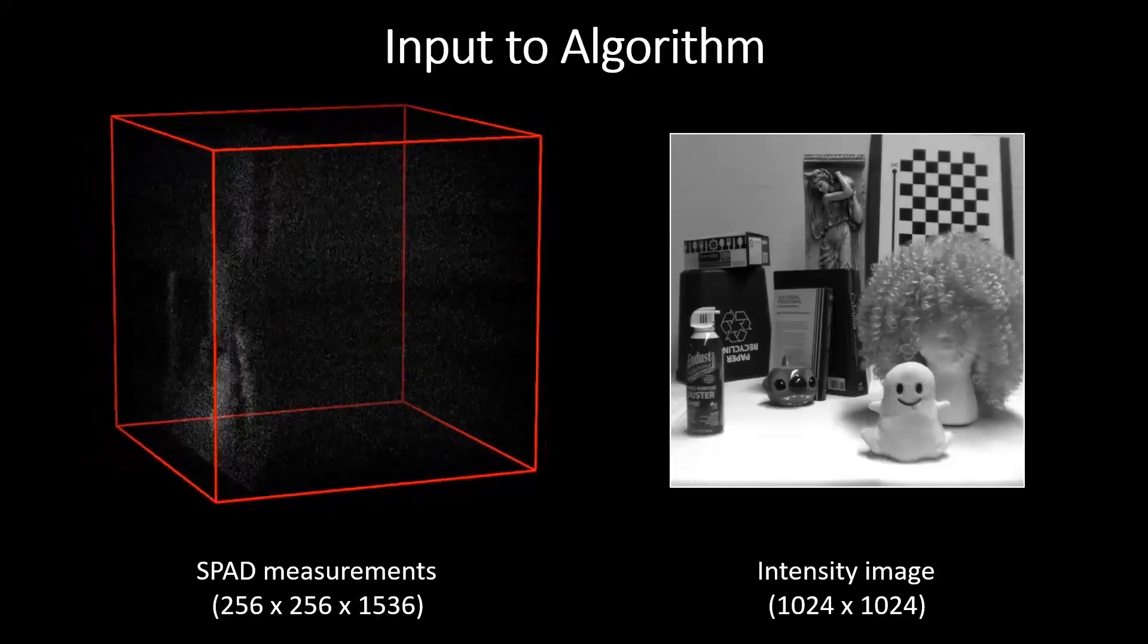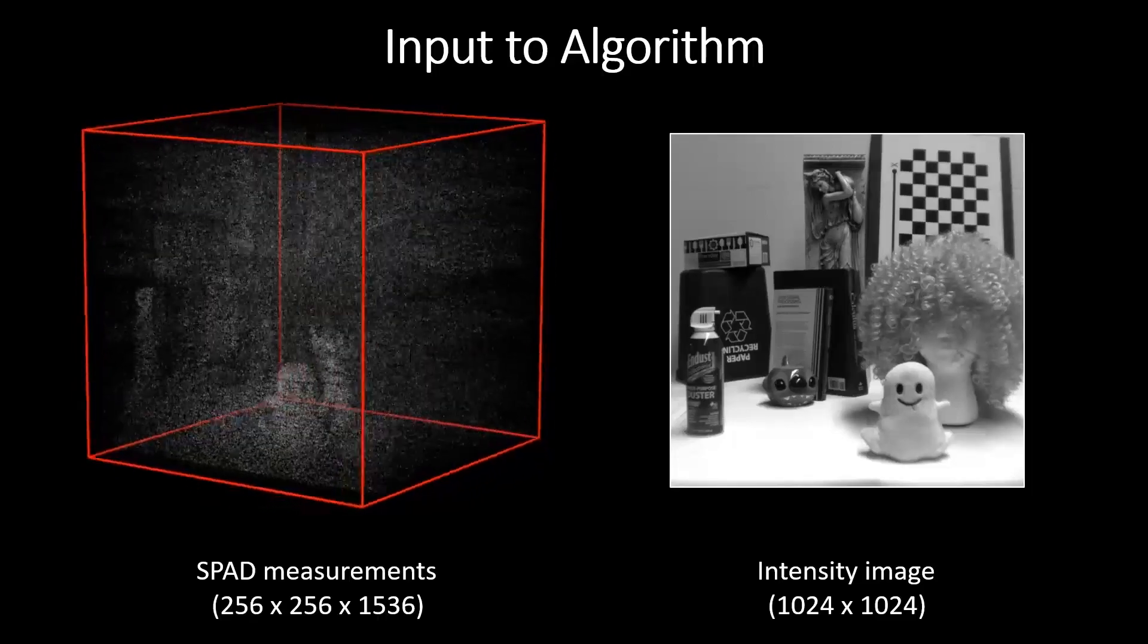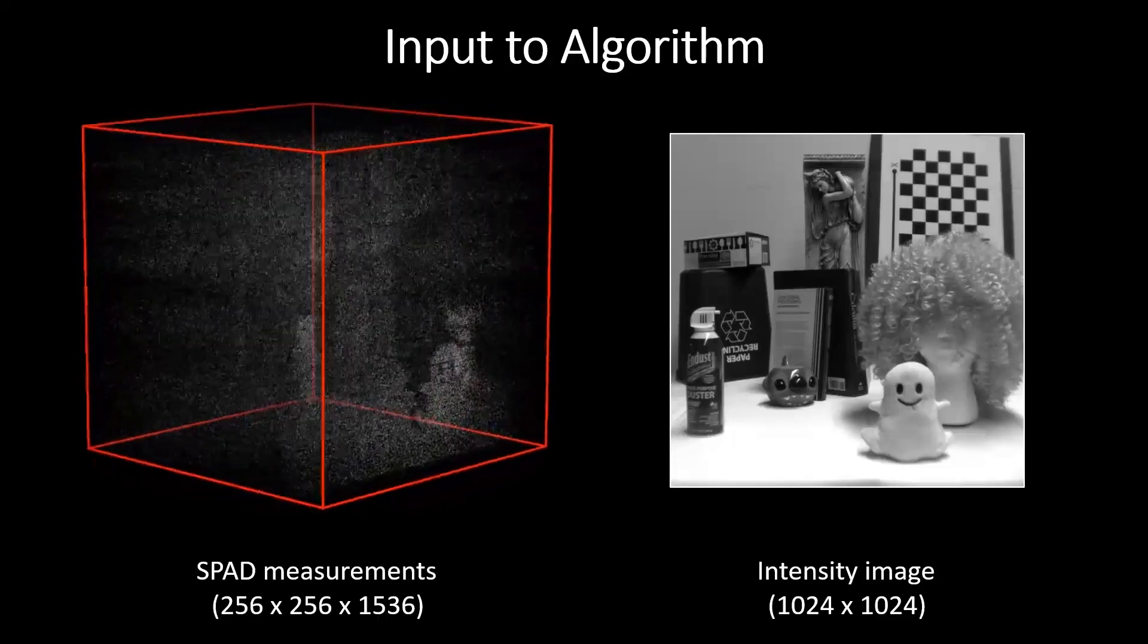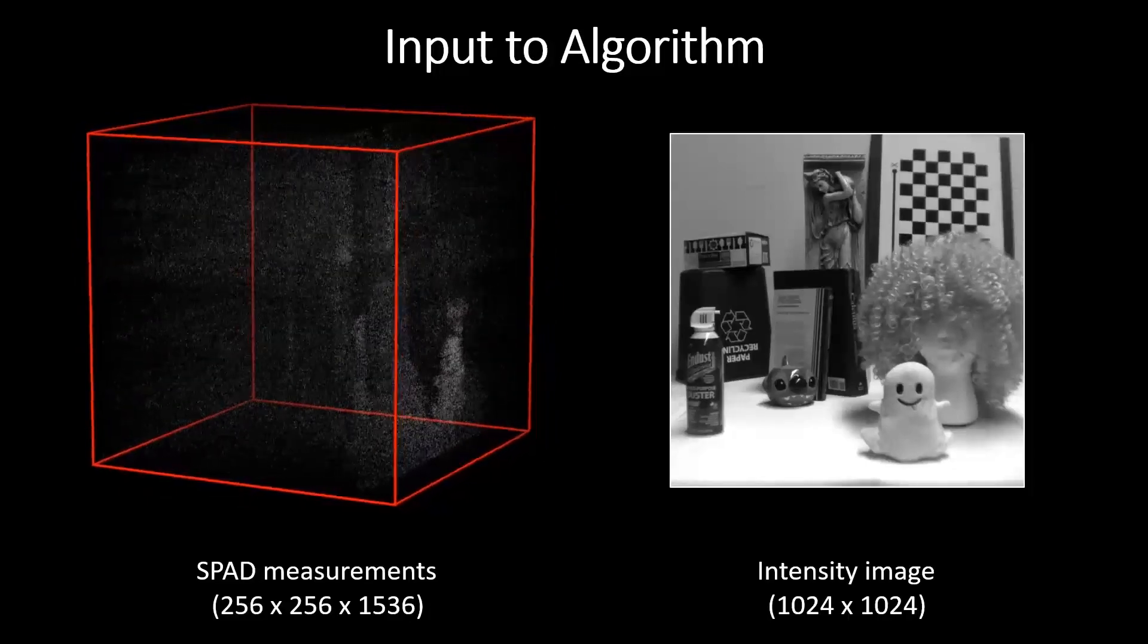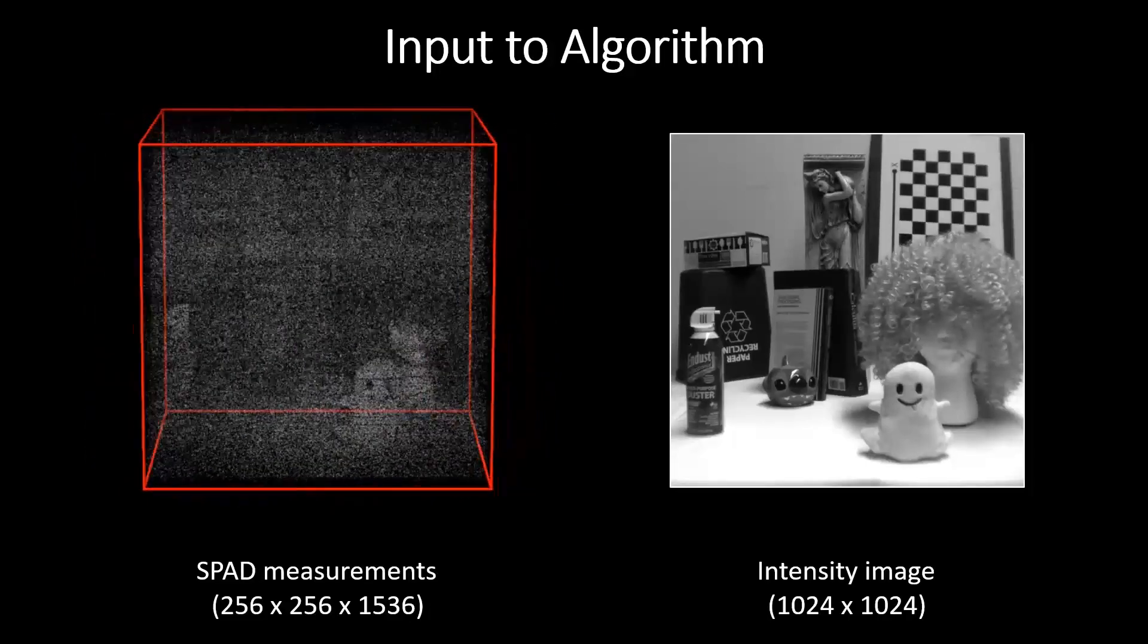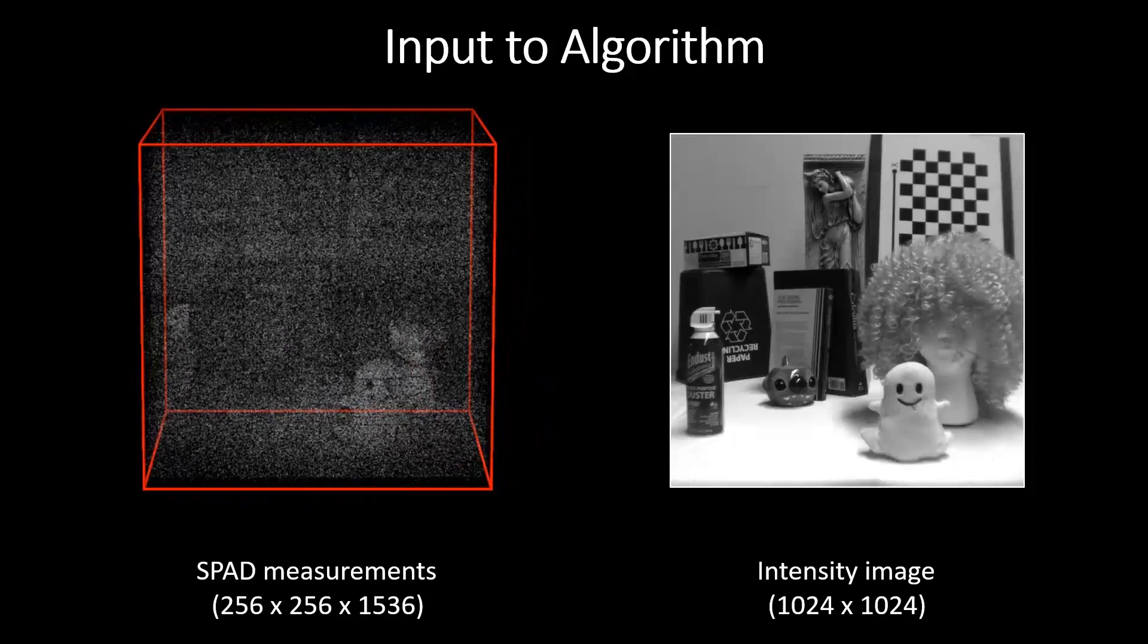A SPAD detects the spatial position and time of flight for individual photon events. The detected events are either a response to the pulsed source sent into the scene, photons due to ambient sources, or dark noise generated by the device.